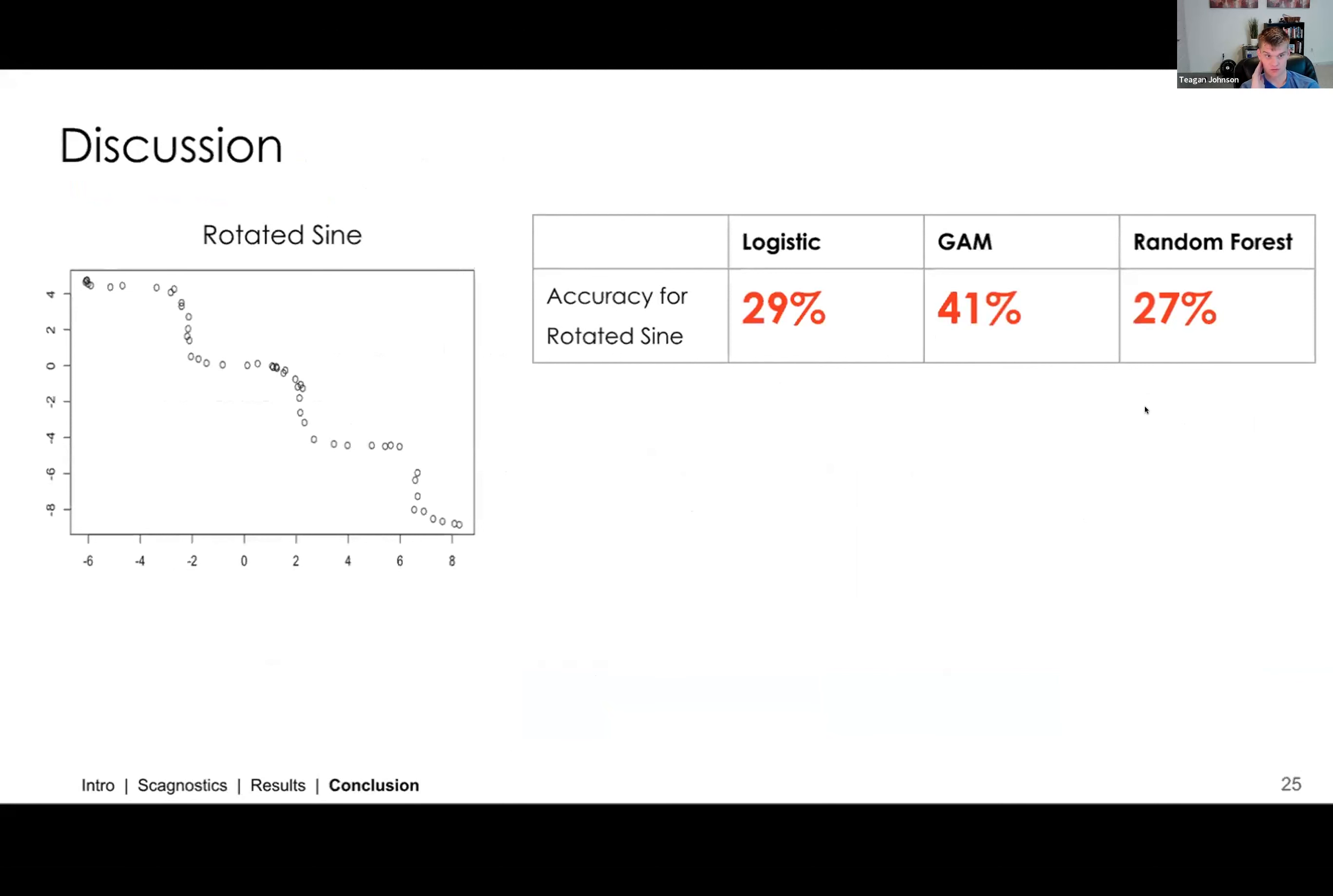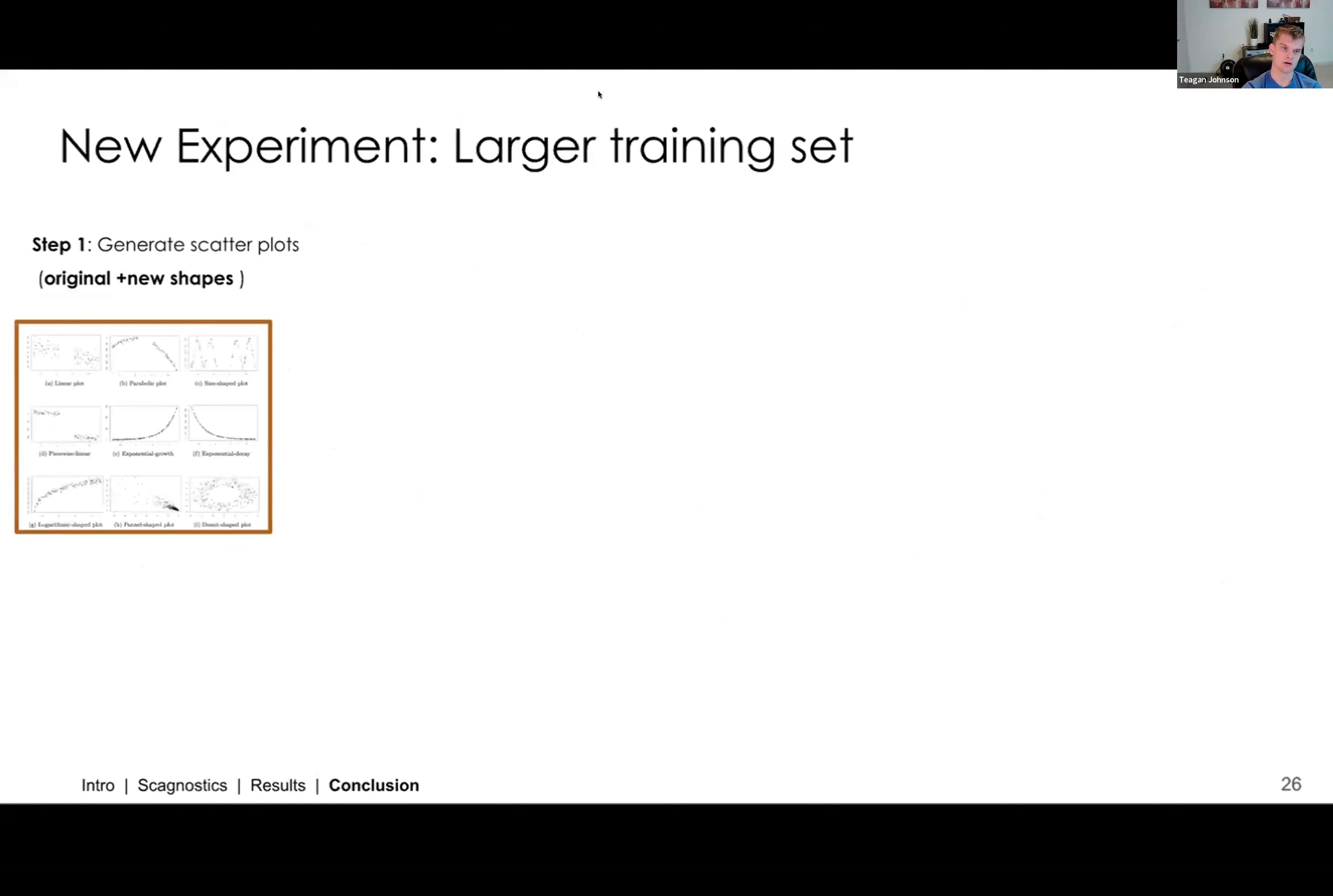So we're going to talk a little bit about the rotated sine distribution specifically. Here's just a quick review of the accuracy numbers that each of the three models presented on the rotated sine. They're all pretty low because it wasn't trained on that rotated sine. So the big questions that we want to answer is, why did the models perform so poorly on rotated sine and the other two problematic distributions? Can we improve it by adding more to the training data set? And is computer vision actually a more suitable approach to this problem? And so we conducted a new experiment where we generated all the original training distributions along with the additional testing distributions.